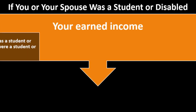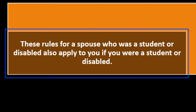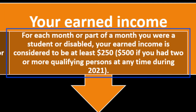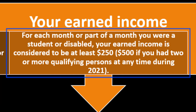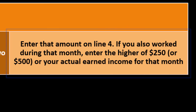For any month your spouse wasn't a student or disabled, use their actual earned income if they worked. These same student/disabled rules apply to you if you were a student or disabled — your earned income is considered to be at least $250 or $500 if you had two or more qualifying persons. Enter that amount on line 4, using the higher of $250/$500 or actual earned income if you also worked that month.